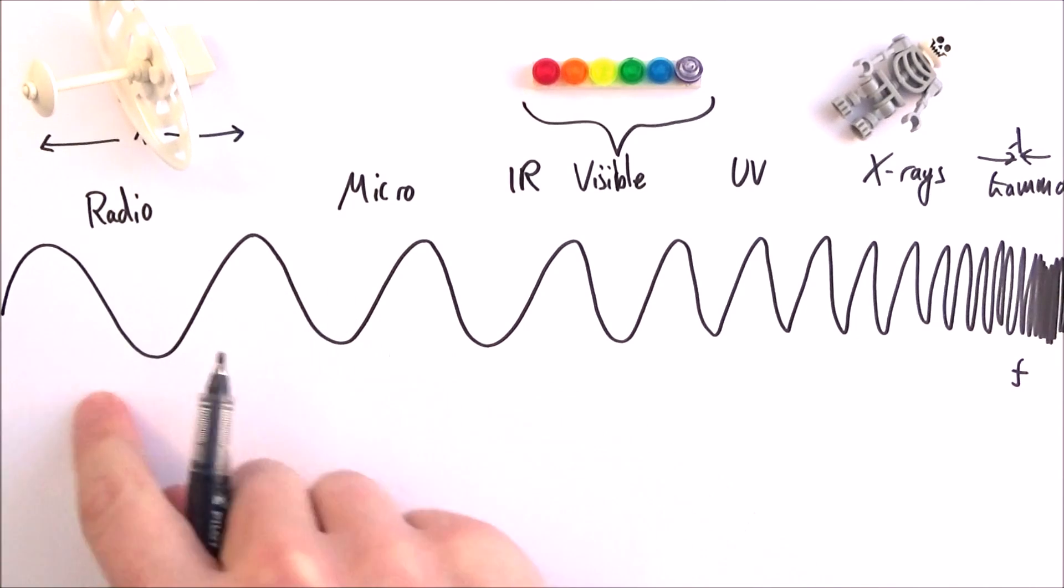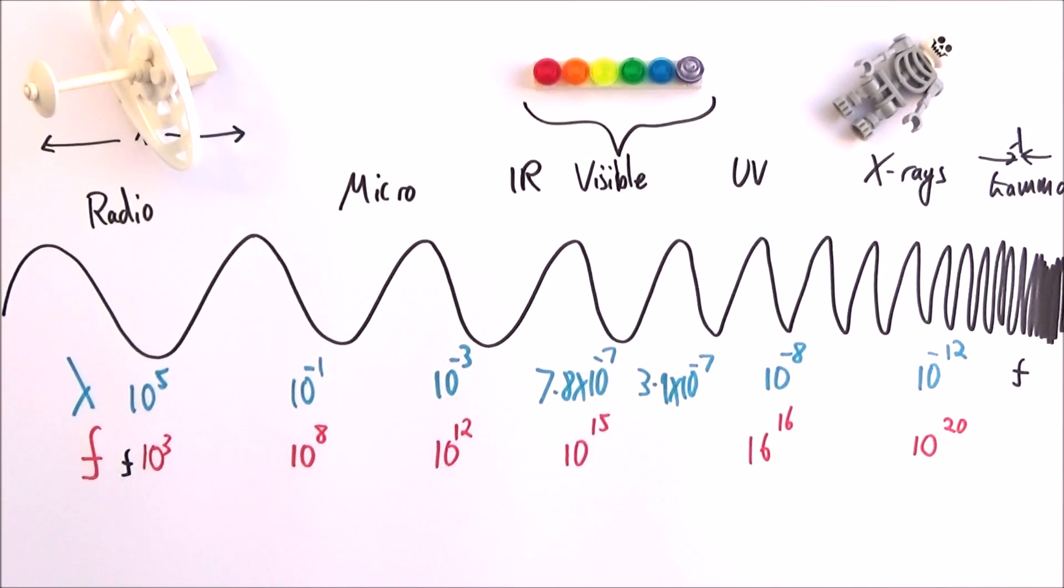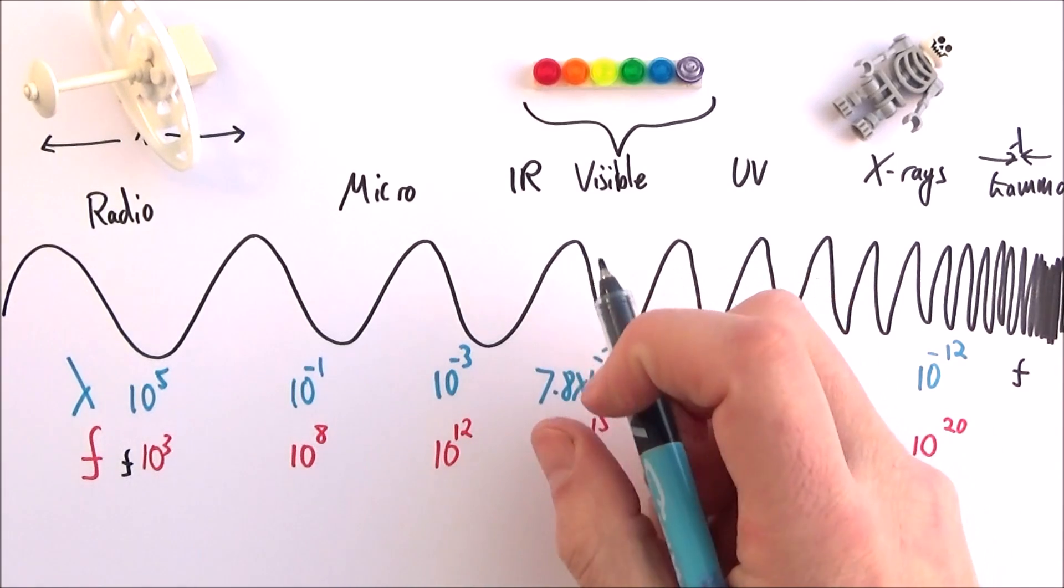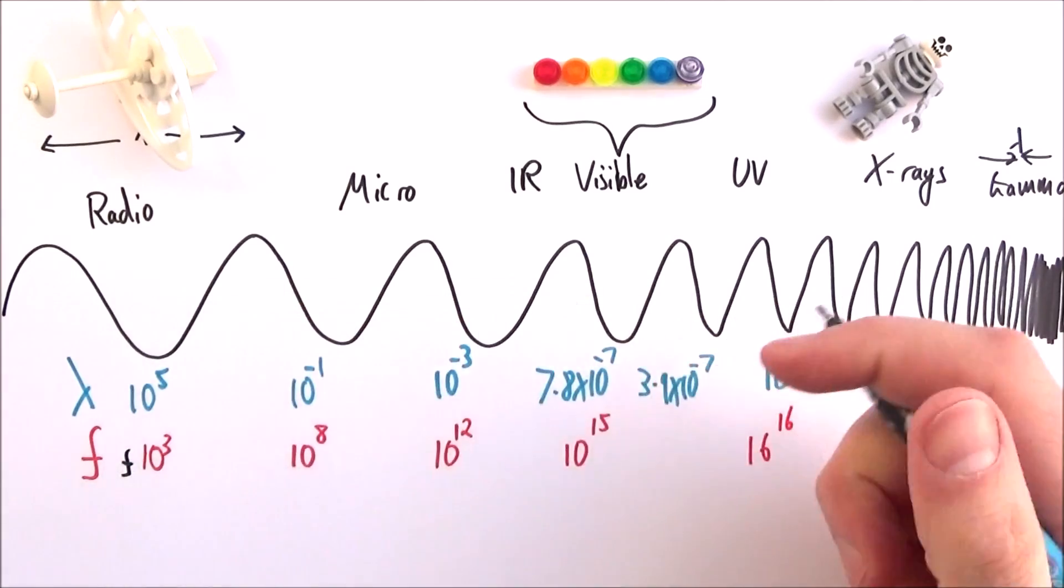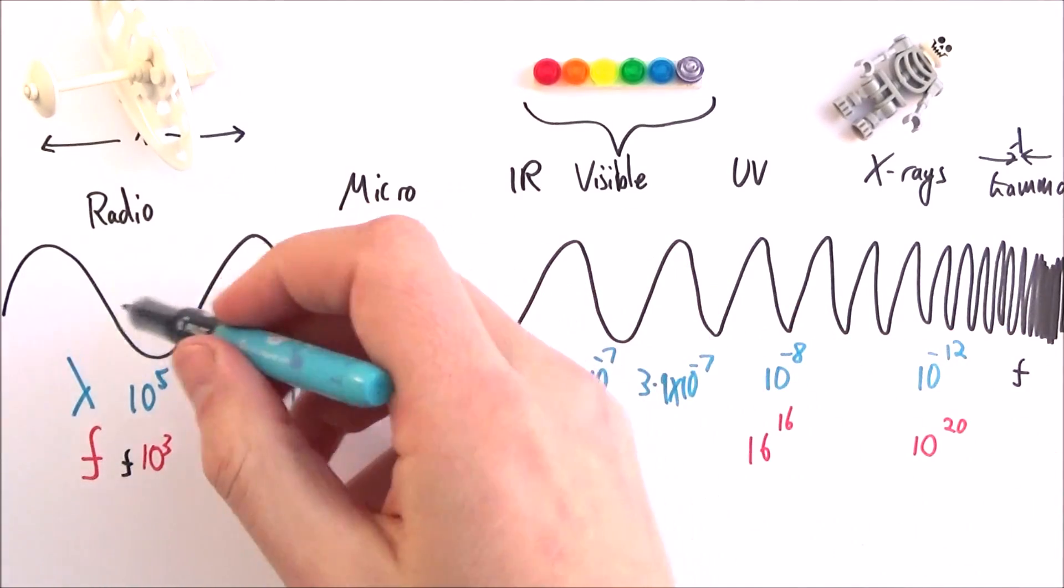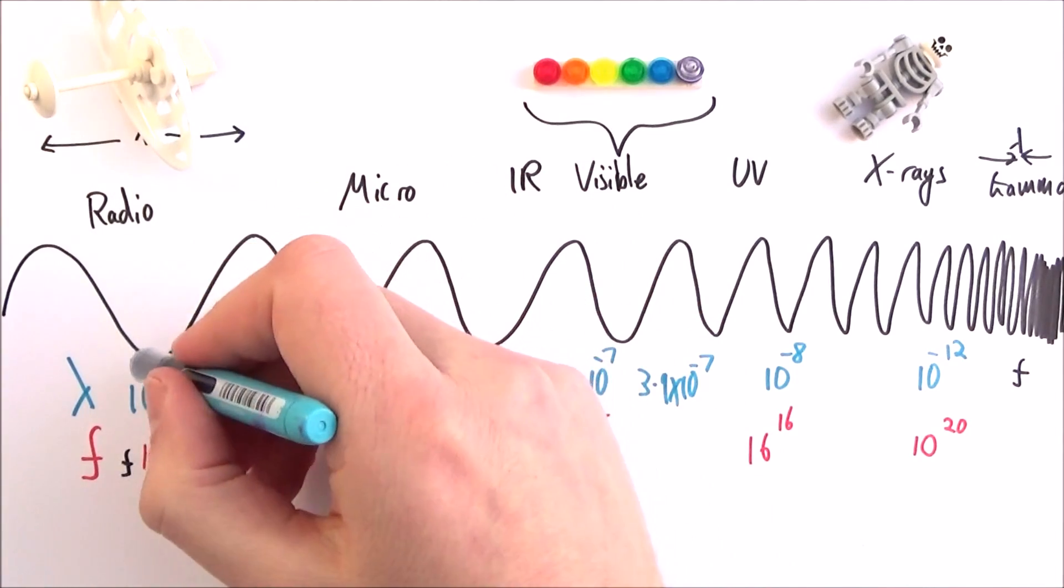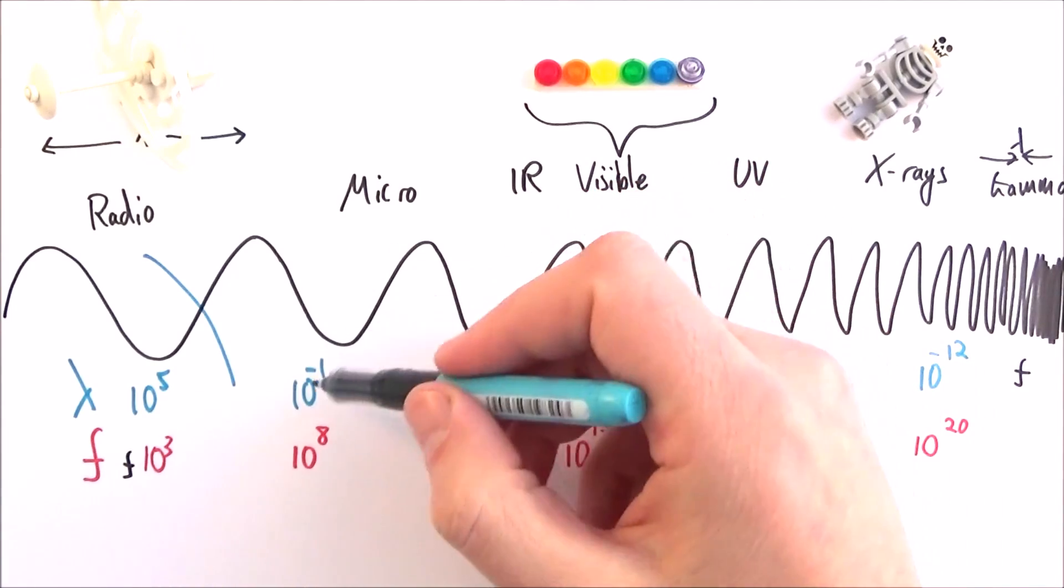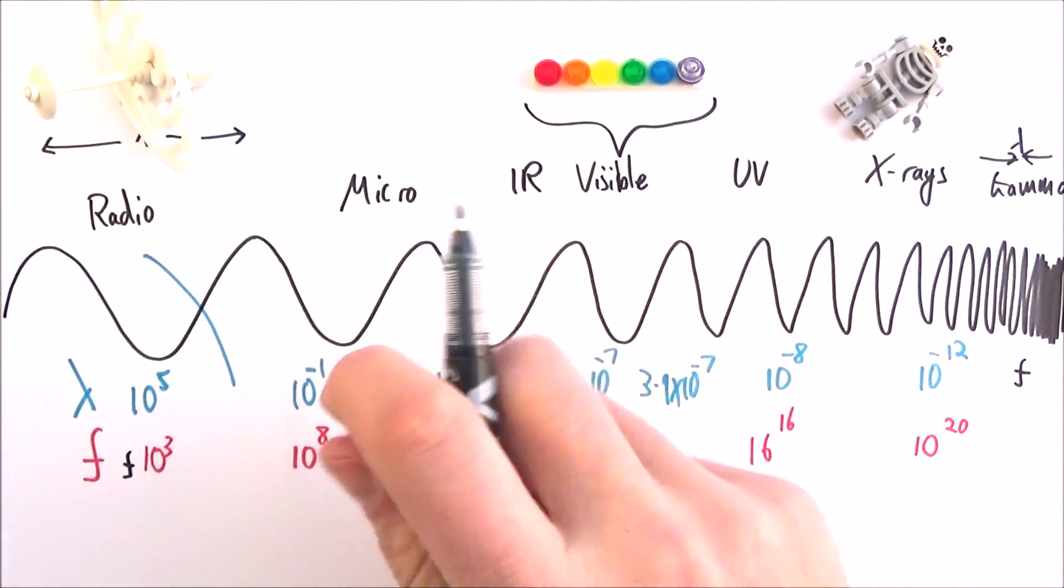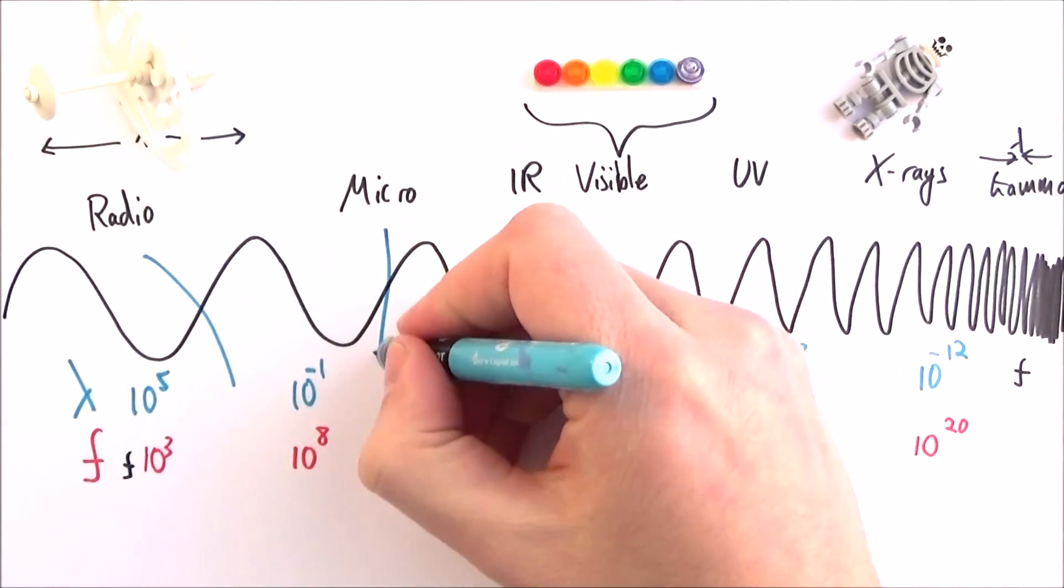So a lot of numbers to remember. And at some point, you've got to start to just to memorize these and have a rough appreciation of their size. So radio waves are effectively, they can be really long, down to about a metre in wavelength. If we think about microwaves from 10 to the minus 1 to 10 to the minus 3, so sort of 10 centimetres down to about a millimetre. So that's microwaves.